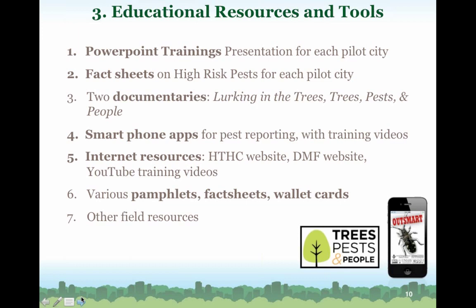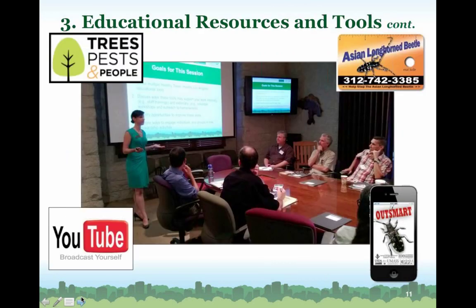We also have fact sheets, two documentaries, smartphone apps — we're working with staff at the University of Georgia and other local providers on smartphone applications — internet resources, pamphlets, and wallet cards. One I personally love is our children's fact sheets. We have coloring sheets for kids on Asian longhorned beetle and emerald ash borer. As an example, we were at Huntington Gardens giving a presentation on pests and diseases affecting that area, and I was able to share that important information with people in the room.